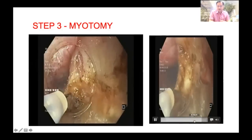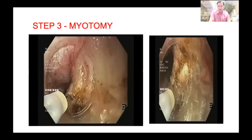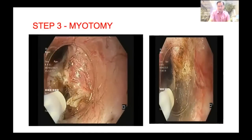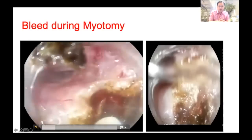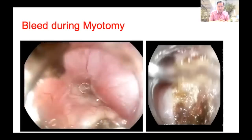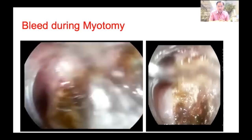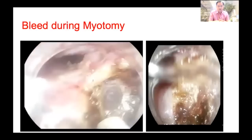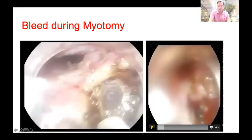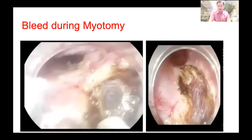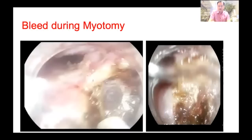I am extending this myotomy into the stomach to ensure a proper result. During myotomy you can encounter bleeding — in this case bleed happens from the apex, and as I extend the myotomy the bleed site comes to the right margin, which is adequately controlled by applying a few strokes of coagulation current. In another case, bleed from the right margin of myotomy is also controlled by coagulation current only — no coagulation forceps were required.